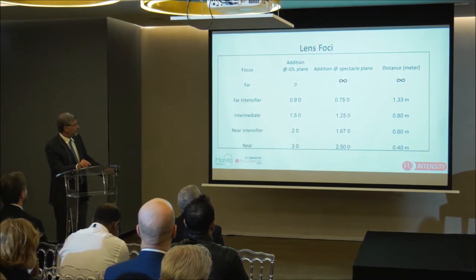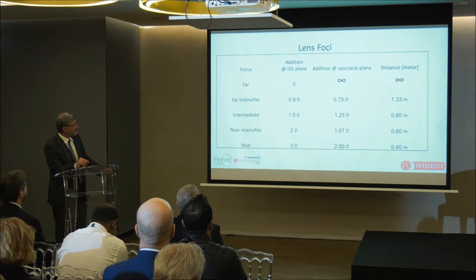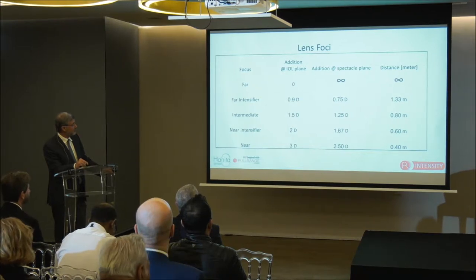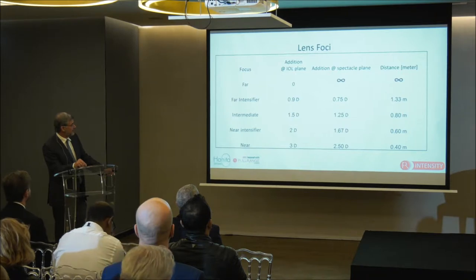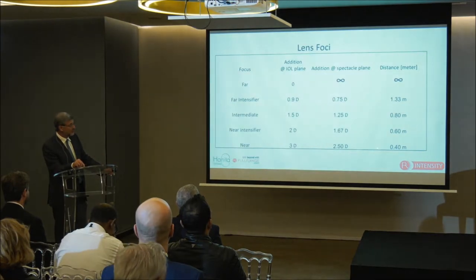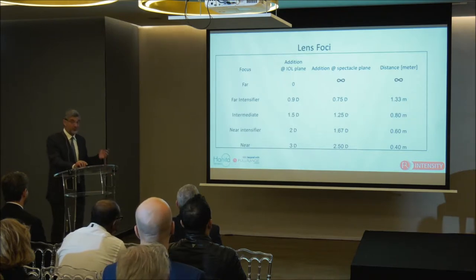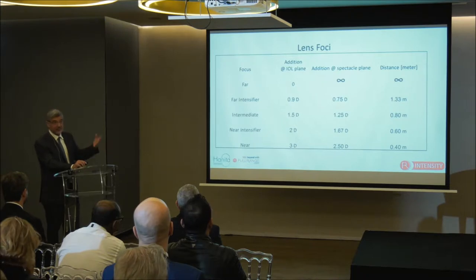In addition to the classical three foci, there are two more: one in between far and intermediate — termed 'far intensified,' which is why it's called the Intensity lens — and another in between near and intermediate, at 2 diopters, which is about 60 centimeters. So you have foci at 40, 60, and 80 centimeters — different focal points — which means this is not a trifocal lens; this is a polyfocal lens, a multiple-focal lens.